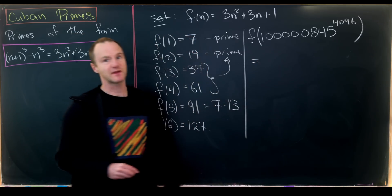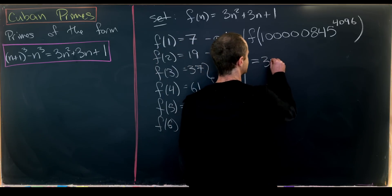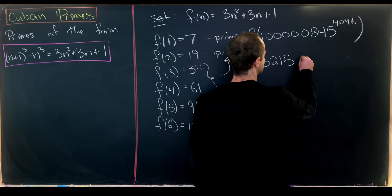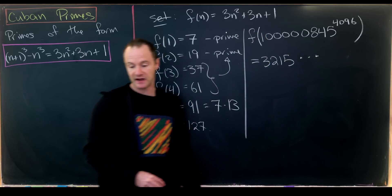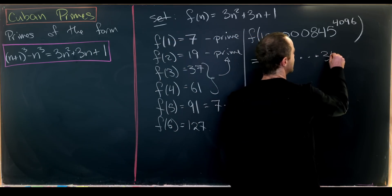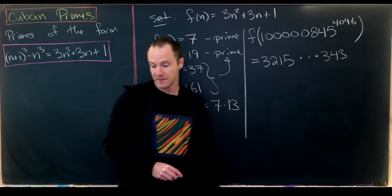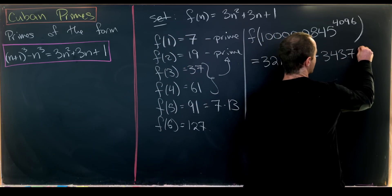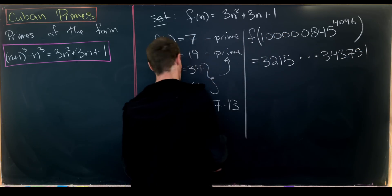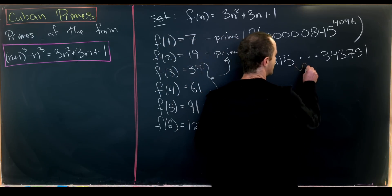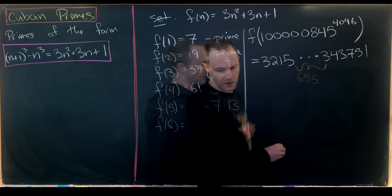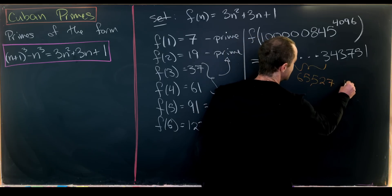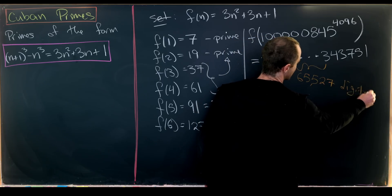This is a really large number. It starts with 312,315 and ends with 343,751. How many digits are in the middle? An astronomically large number—there are 65,527 digits that we've left off here.